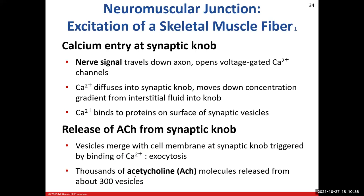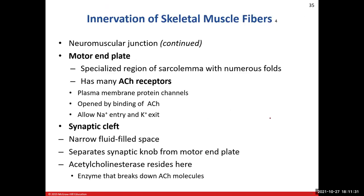Our action potential — our nerve signal — comes down and opens those voltage-gated calcium channels. Calcium enters the synaptic knob, binds onto the synaptic vesicles, and gives them an overall positive charge. That positive charge moves the vesicles toward the plasma membrane near the synaptic cleft. We then release our neurotransmitter acetylcholine into the synaptic cleft through exocytosis. The synaptic vesicles merge and fuse with the plasma membrane, releasing acetylcholine. Roughly 300 vesicles will release acetylcholine into the synaptic cleft.